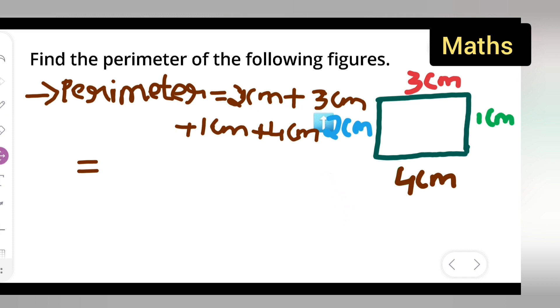2 plus 3 will give you 5, 4 plus 1 will give you 5, so 5 plus 5 will be 10 cm. So basically your answer is 10 cm. Okay, you can take down 10 cm.